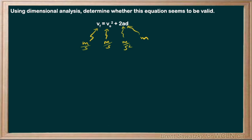So let's see what we have here then. On the left of the equal sign, meters per second. On the right, we have meters per second.